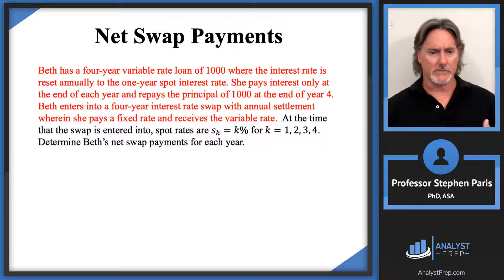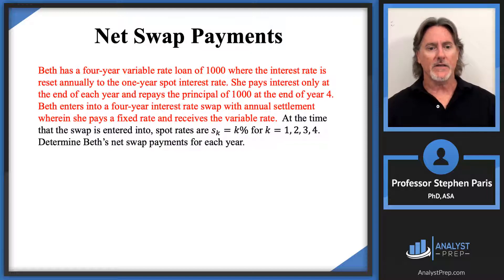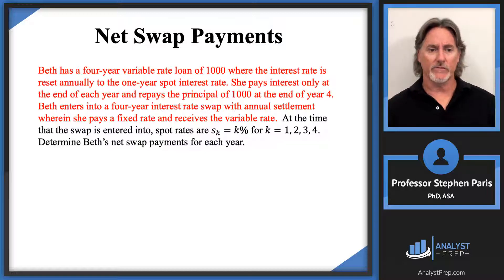This is a lot of words but all it's doing is describing the interest rate swap. The very last line says she pays a fixed rate. That fixed rate is the swap rate — so she pays the swap rate and receives the variable rate. In other words, Beth is going to be the payer, not the receiver. Beth is the payer because the payer is the one who pays the fixed rate.